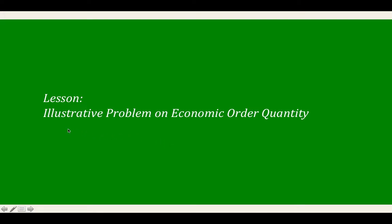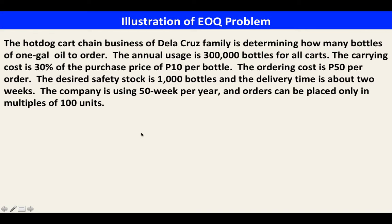We are going to discuss an illustrative problem on Economic Order Quantity — another example of a problem in EOQ. The problem is about the hot dog cart chain business of the La Cruz family, which is determining how many bottles of one-gallon oil to order.